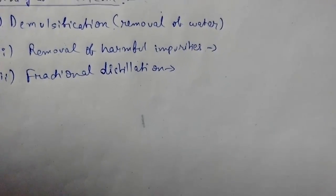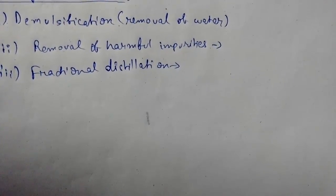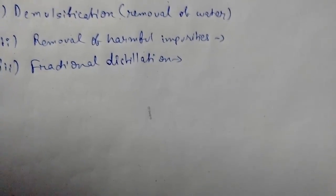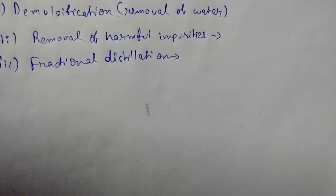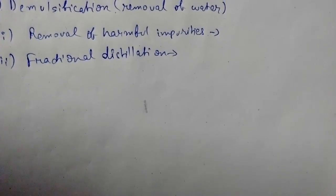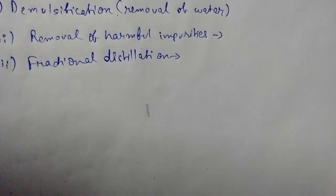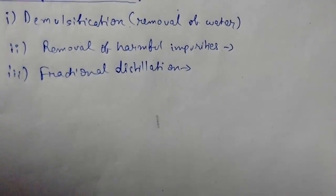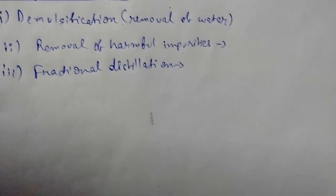All the volatile impurities are removed and the hot vapor is allowed to pass through a fractionating column made up of stainless steel. The vapor goes up and gradually cools down in the fractionating column.